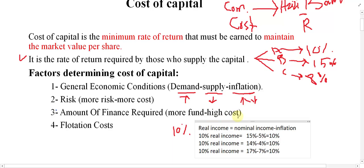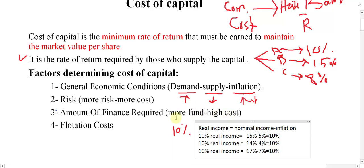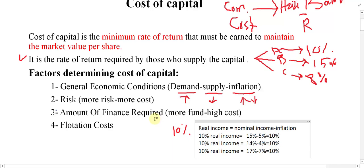The third factor is the amount of finance required — more funds mean higher cost. When a company needs more funds, the chance of default increases and repayment ability decreases, so risk increases and cost of capital increases. For a small amount, the chance of repayment is higher and the chance of default is lower, so cost is also lower.